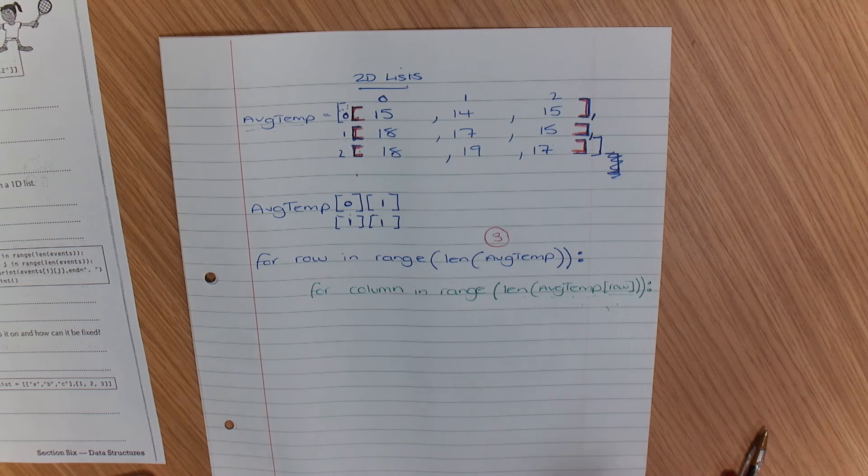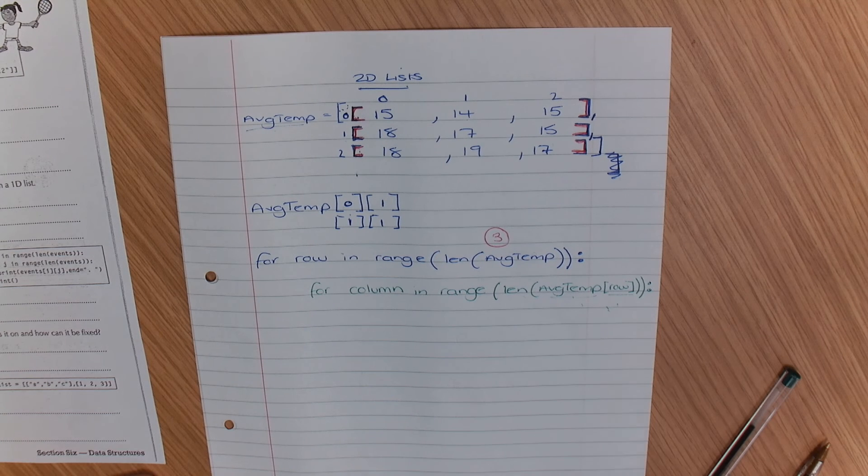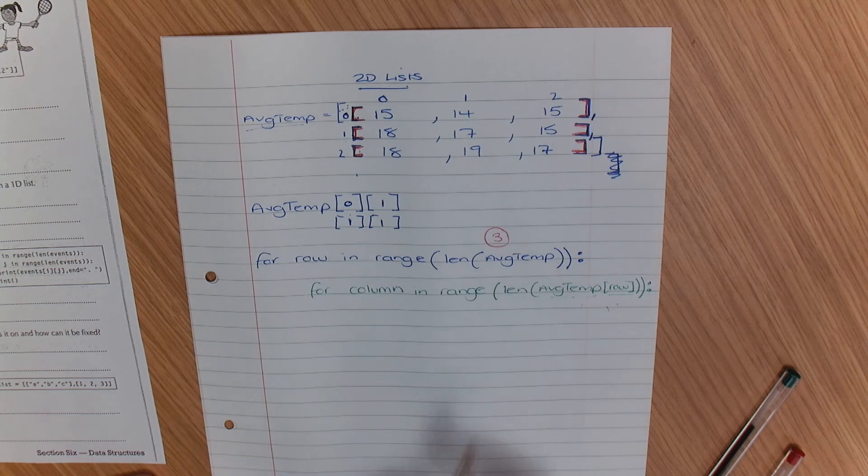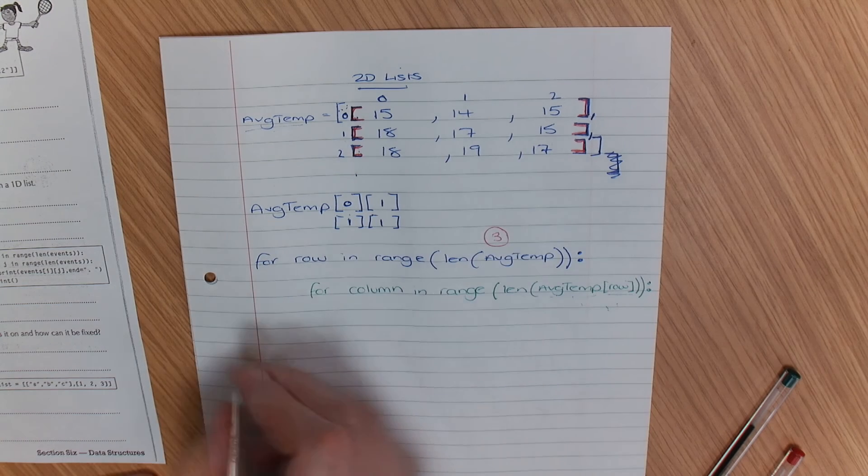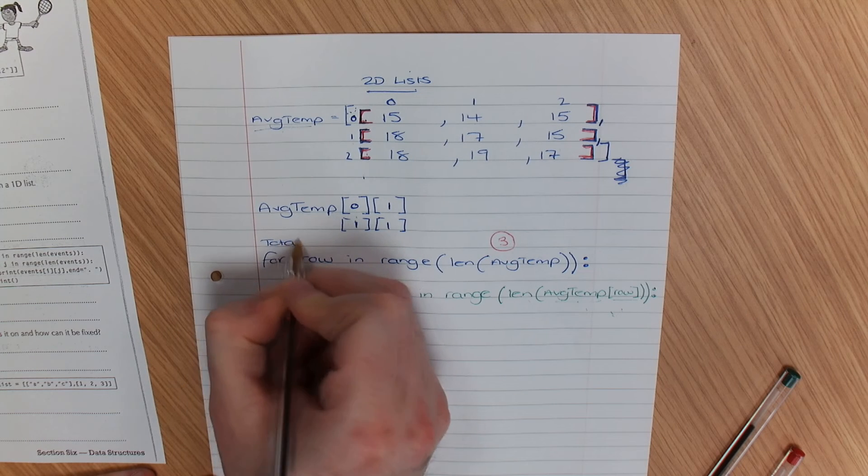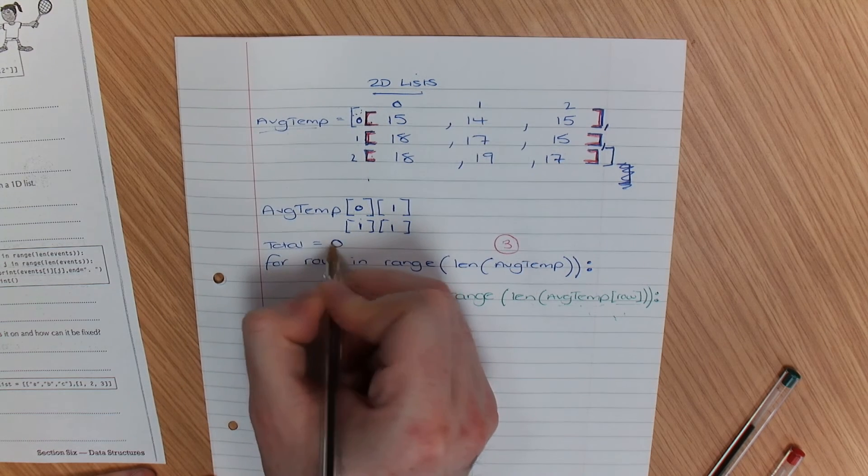Now, that allows me to, if I wanted to, add up a total of all of those numbers. Imagine outside of your program here, I've got total equals zero.